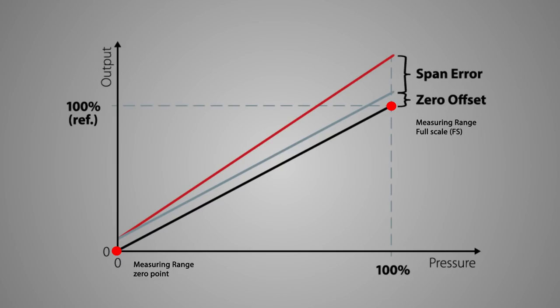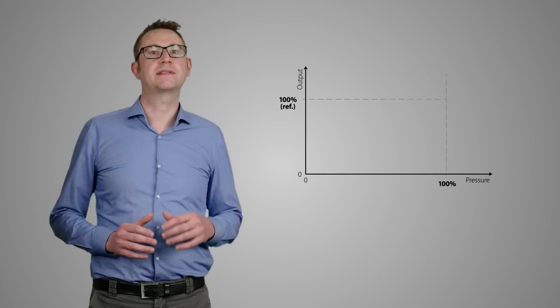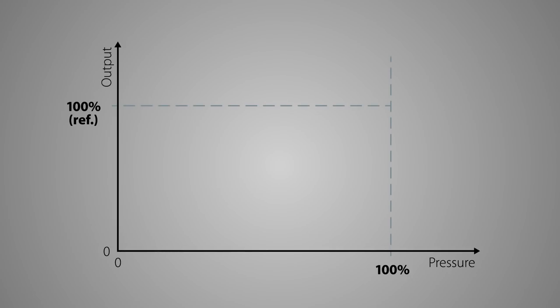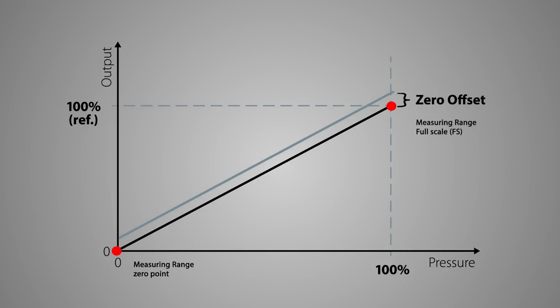Looking at the errors at reference temperature, we are talking about the zero offset and span error. Each measuring device is calibrated to a certain range. This measuring range includes a starting point, the so-called zero point, and an end point, which is called the full scale value. The zero offset describes the error of the output signal at the zero point value. For a relative pressure measurement, the zero point corresponds to the point without any pressure applied.